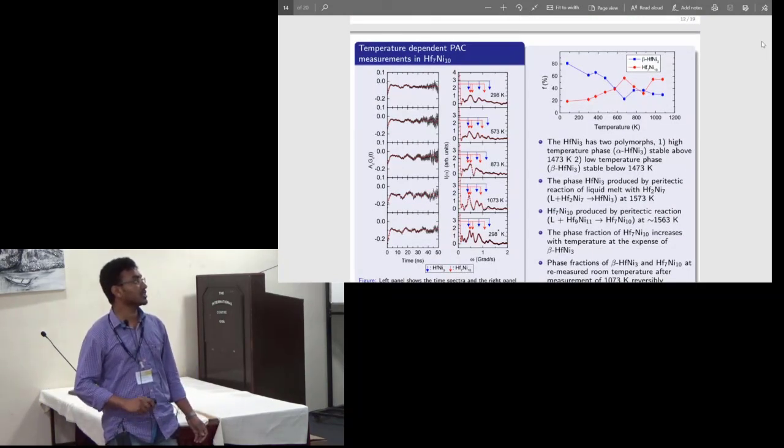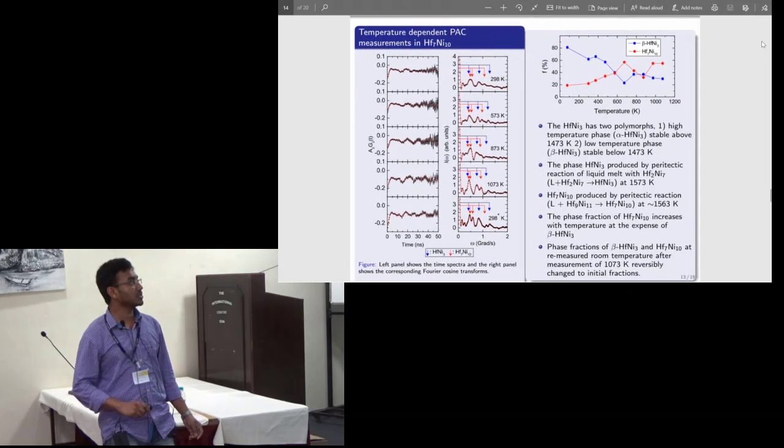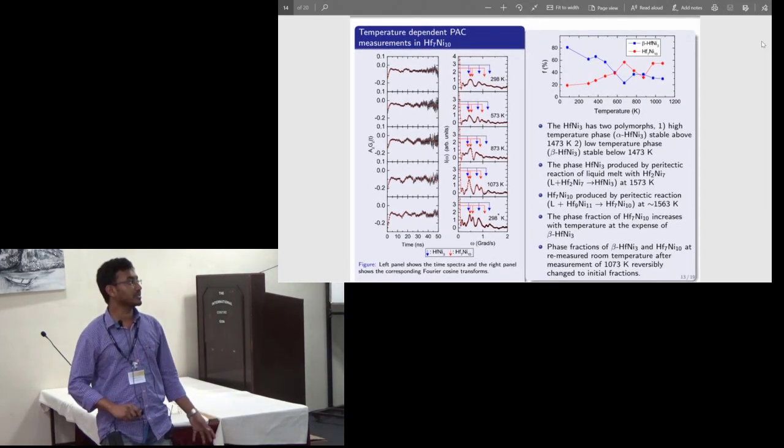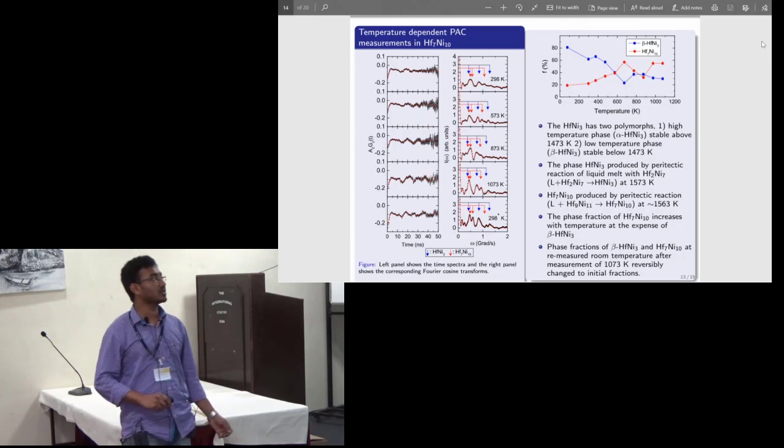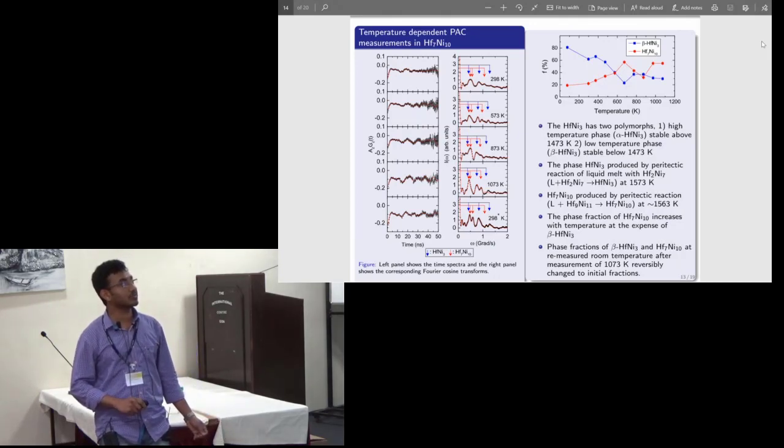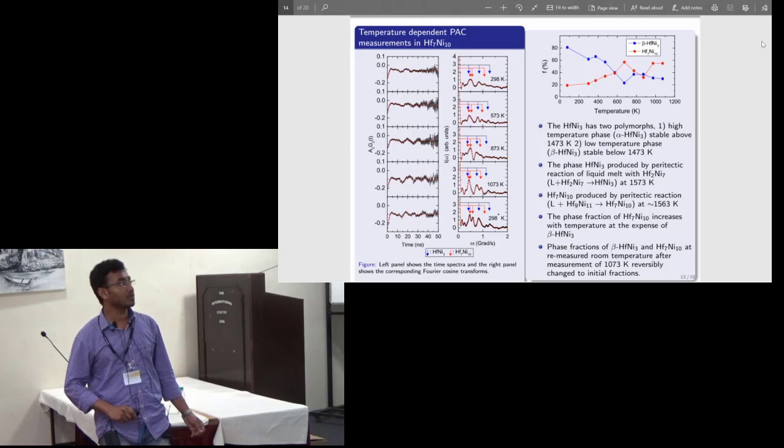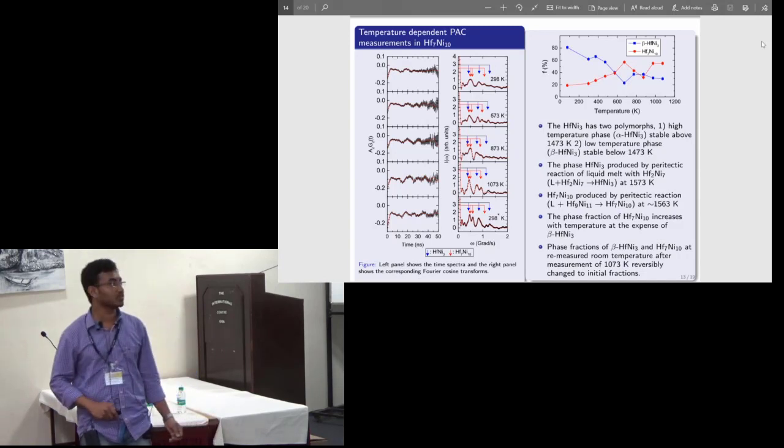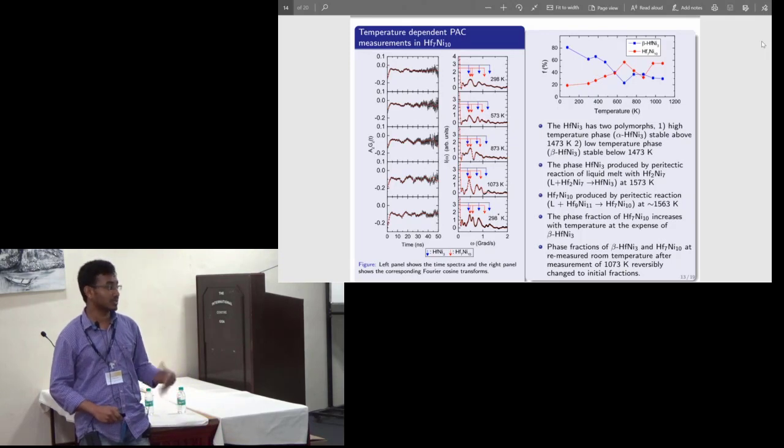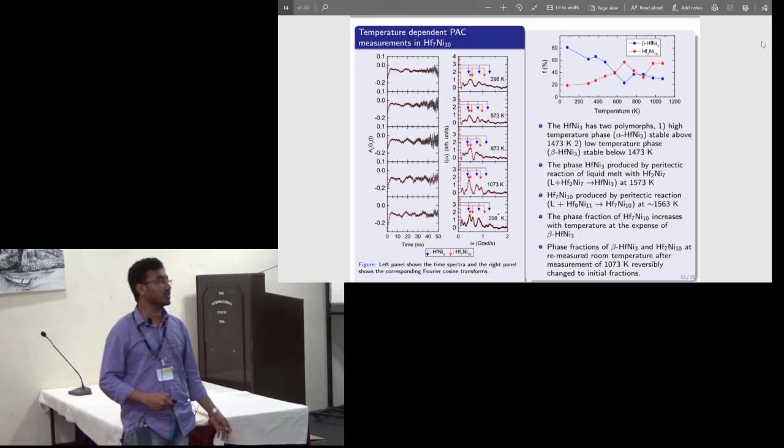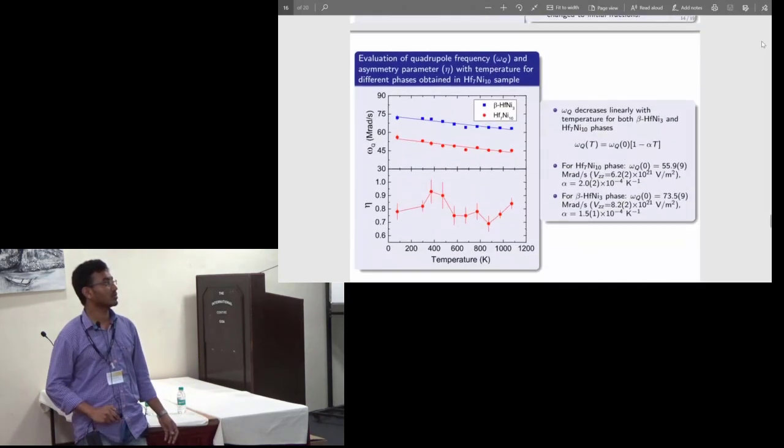These are the temperature dependence spectra of Hf7Ni10. Here, unlike Zr7Ni10 sample, we did not find any type of phase transition. As the temperature is increased the Hf7Ni10 fraction was increased at the expense of beta-HfNi3. Actually, the beta-HfNi3 is a low temperature phase and it is stable below 1473 K, and both these HfNi3 and Hf7Ni10 are formed peritectically from the phase diagram. When we remeasured the spectrum at room temperature after measurement at 1073 K, it is found that the site fractions were found to be reversibly changed to initial fractions.